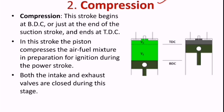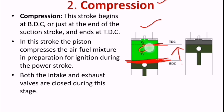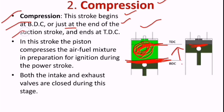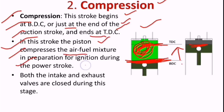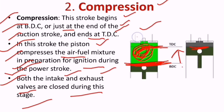The second stroke is compression. The piston moves from BDC to TDC — upwards. Whatever air-fuel mixture is inside the cylinder becomes compressed. This stroke begins at BDC, at the end of the suction stroke, and ends at TDC. The piston compresses the air-fuel mixture in preparation for ignition during the power stroke. Both the intake and exhaust valves are closed during this stage.